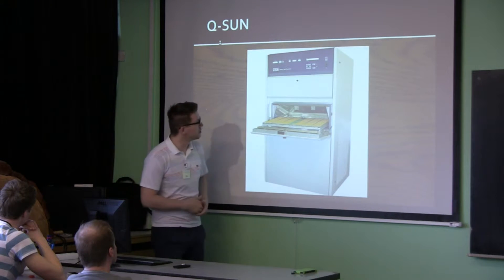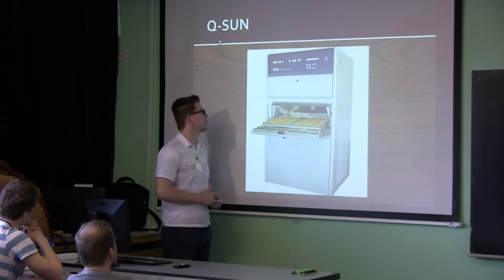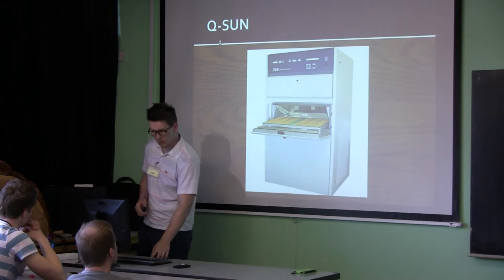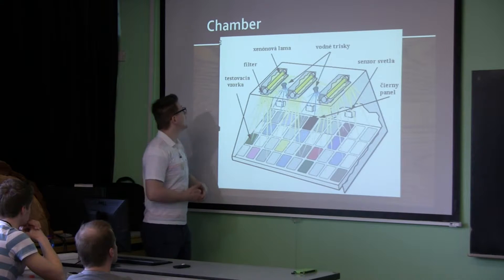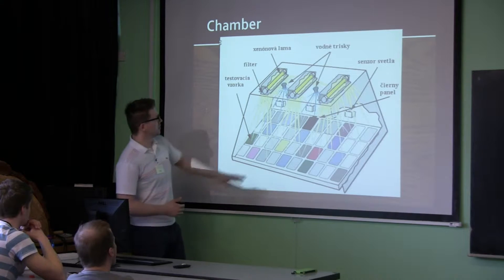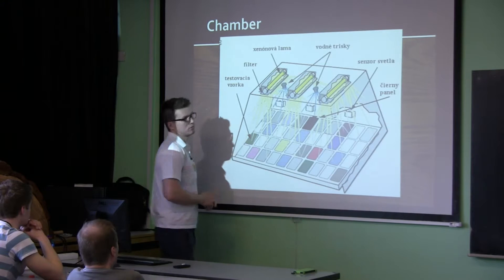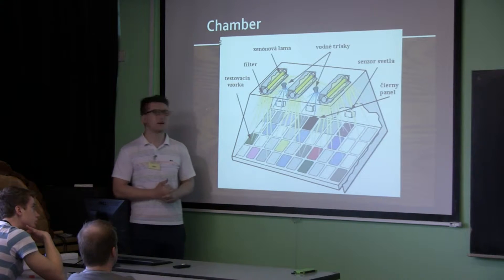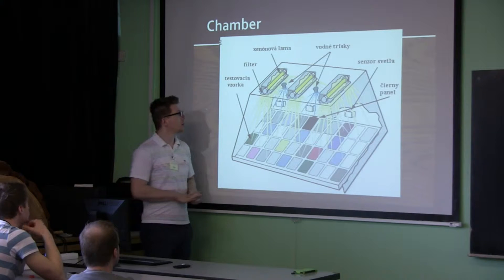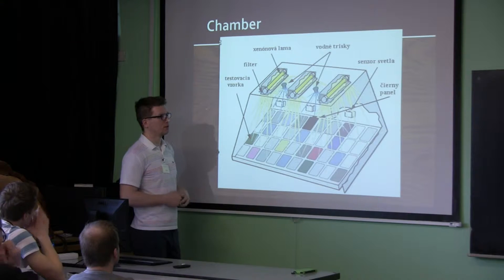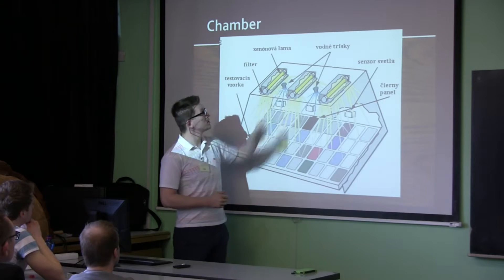For example, there is a picture of wood — my sample of ash. This is the chamber inside. This is the place for samples; we put our wood there. We will measure the color, weight, and dimensions of the samples. These are the Xenotest lamps.